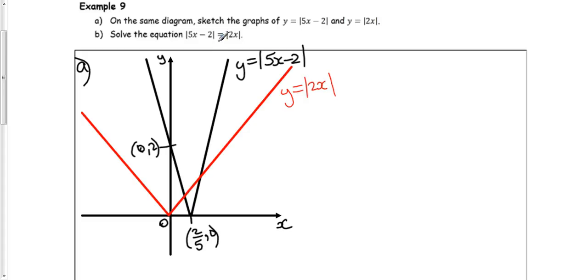Now part B, solve the equation. And you can see it's the two graphs we've already drawn. Let's look at the graph and see how many times they intersect. One, two. These graphs intersect twice, so I'm expecting two solutions.